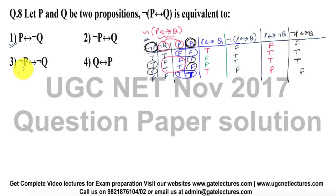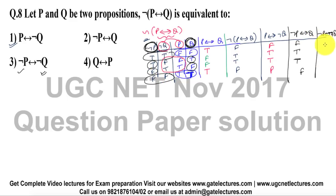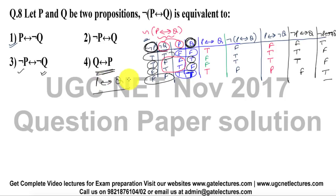Next is negation of P double implication negation of Q. For those two cases this is true and this is true, so negation of P double implication negation of Q becomes: true, false, false, true. The last option is Q double implication of P, which equals P double implication Q — these two are the same.